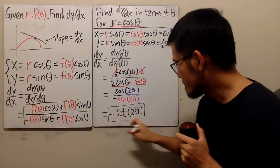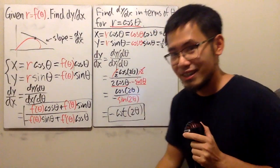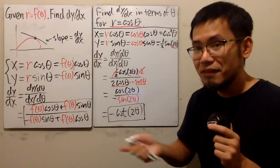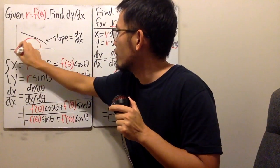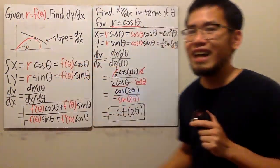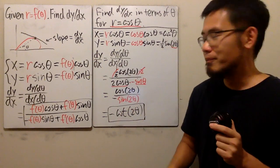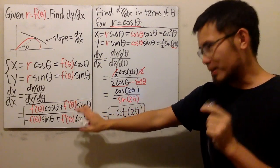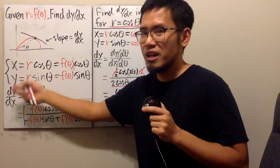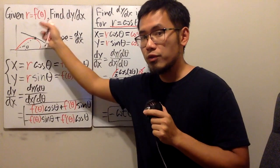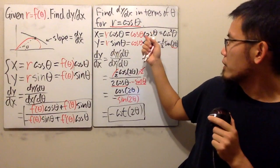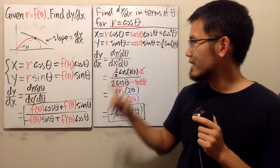This is how you find dy/dx in terms of theta for a polar curve. To get a numerical slope value, you need to know the theta value to plug in. One more time — don't memorize that big formula. Instead, know the connection: change from polar to parametric, and then do what you've done in the previous section. It's much easier, and sometimes you'll get nice cancellations.